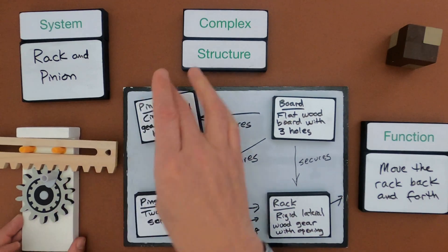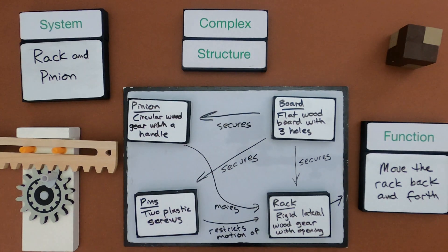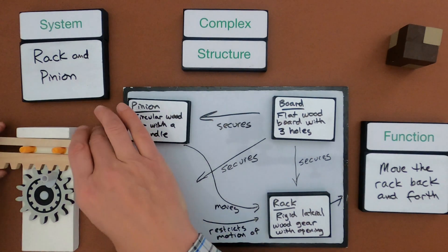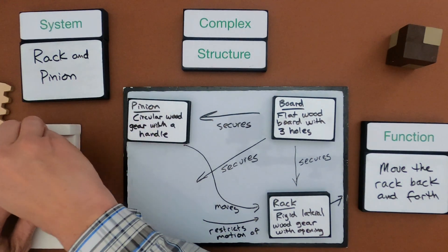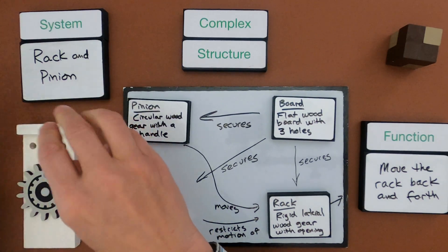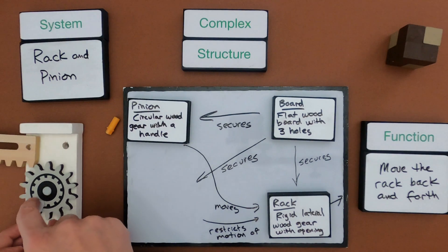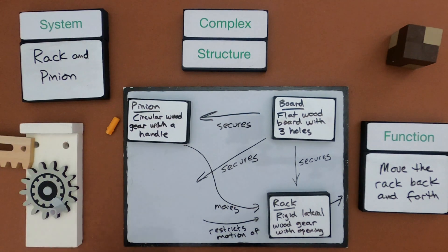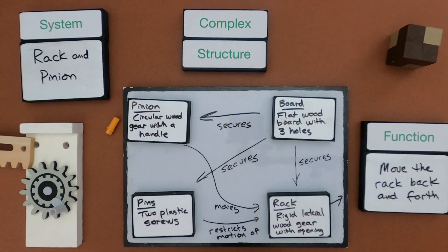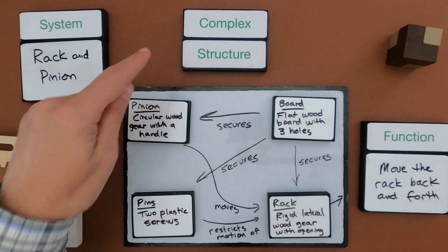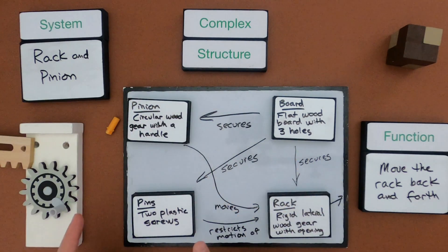I can also start thinking about what would happen if I were to remove some of the structures. If I were to remove the pins, what's going to happen to the rack and pinion? Well, it should restrict the motion of the rack — I can still move the rack but it's not going to stay within that point. So that's a complex structure. First identify all the structures within it, then see how they're connected and how they lead to the eventual function.